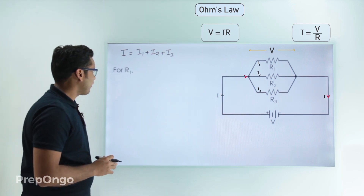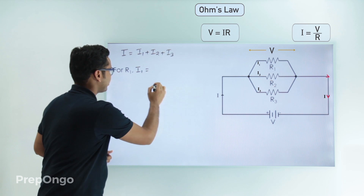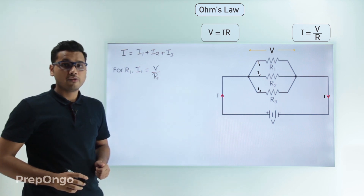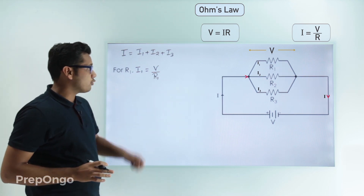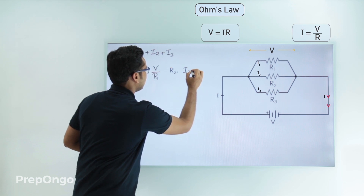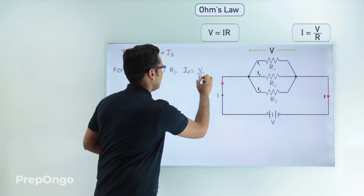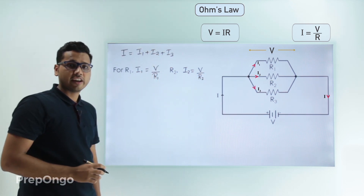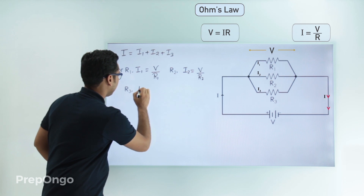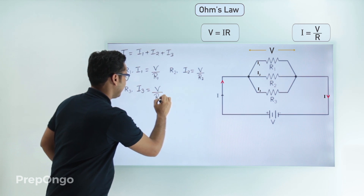Applying Ohm's law for R1: I1 = V/R1. We can apply the same for R2: I2 = V/R2, since the voltage is the same across all resistors in parallel. Similarly for R3: I3 = V/R3.